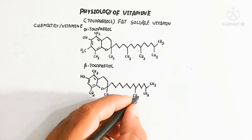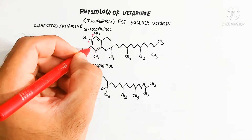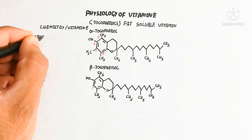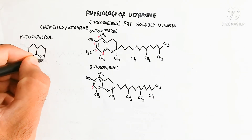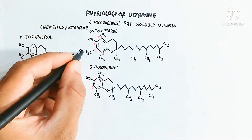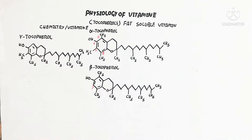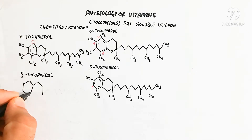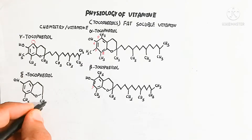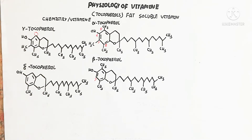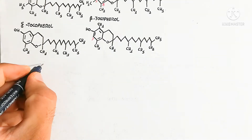Beta-tocopherol differs by having an absence of the methyl group at carbon number seven. Gamma-tocopherol has an absence of the methyl group at carbon number five. Delta-tocopherol has an absence of the methyl group at carbon number seven as well. You can see these differences in the diagram.